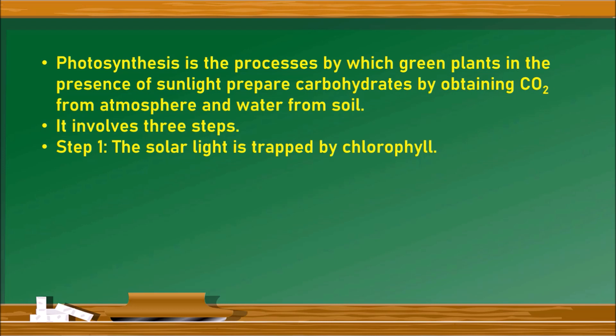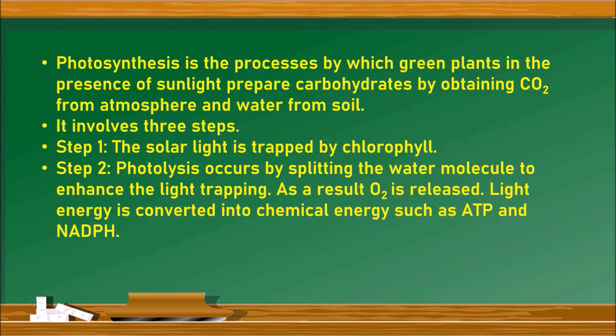In step 1, solar light is trapped by chlorophyll. In step 2, photolysis occurs by splitting the water molecule. As a result of photolysis, oxygen is released along with some protons and electrons. Oxygen is released into the atmosphere, whereas protons and electrons are utilized to convert solar energy into chemical energy such as ATP and NADPH.